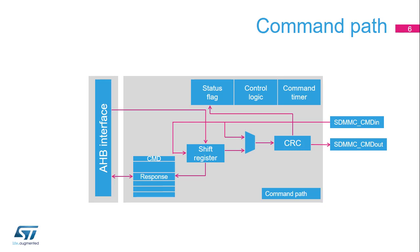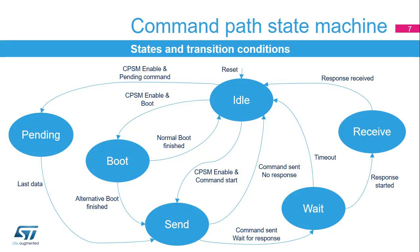After the last payload bit is sent, a CRC7 is computed and sent on the bus before generating the end bit. SDMMC CMD in and SDMMC CMD out are two modes indicating how the SDMMC CMD pin is working. When a response is expected, the command path is configured to SDMMC CMD in and waits for the device response. The transmission and reception of commands is controlled by the command path state machine, or CPSM. When no command or response is in progress, the command path is in idle state.